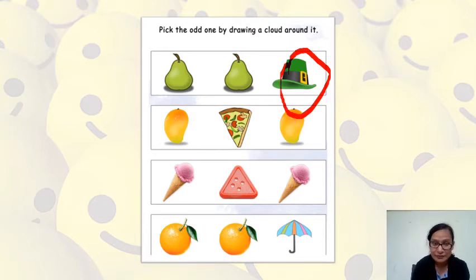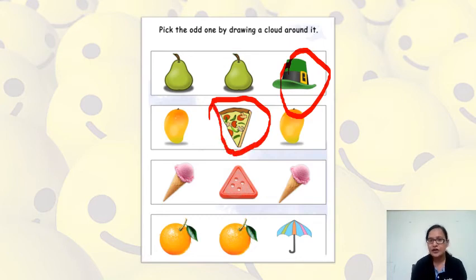Now in the second row, you can see that we have two mangoes and one pizza. Mango is a fruit and it's healthy food. But pizza is not healthy food. So this is odd from others. The other two are mangoes and this is not a mango.